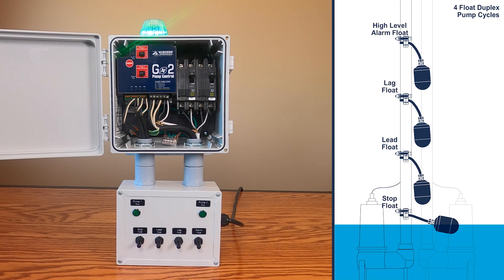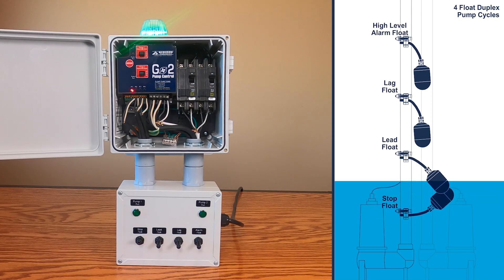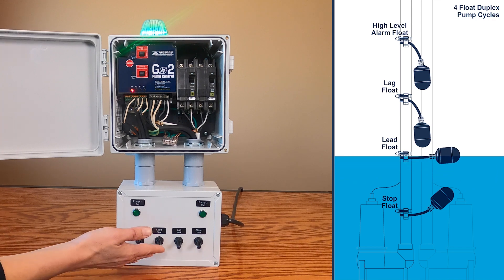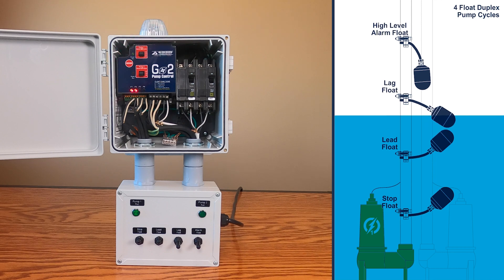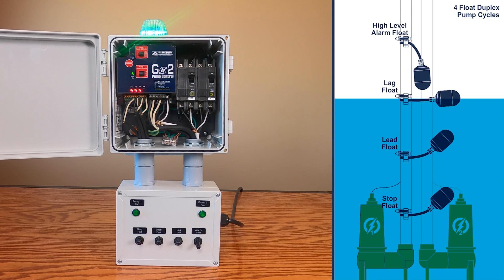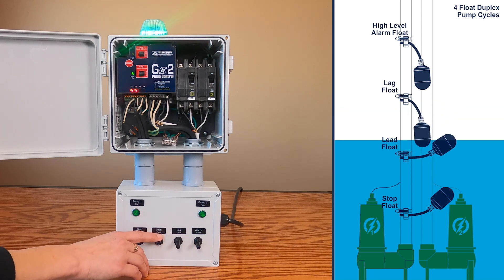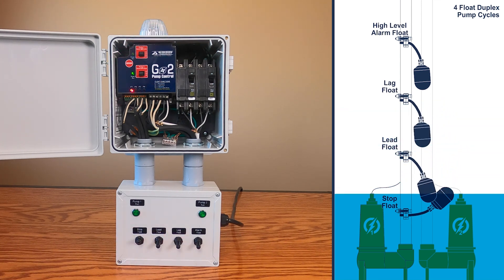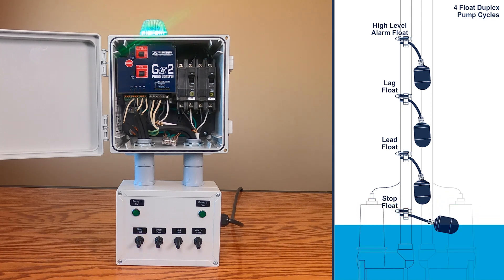Next, let's simulate a lag pumping cycle. As the water rises, the off float will activate. The water level continues to rise and the lead float will activate and pump 1 will turn on. The water level continues to rise and the lag float will activate and pump 2 will turn on. As the pumps are lowering the water level, the lag float will tilt down, then the lead float, but the pumps will remain on all the way down to the off float. This completes the lag pump cycle.